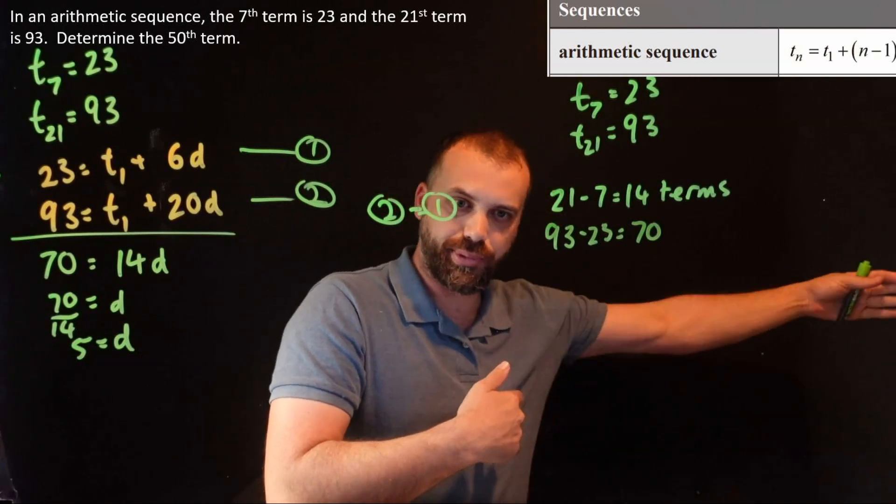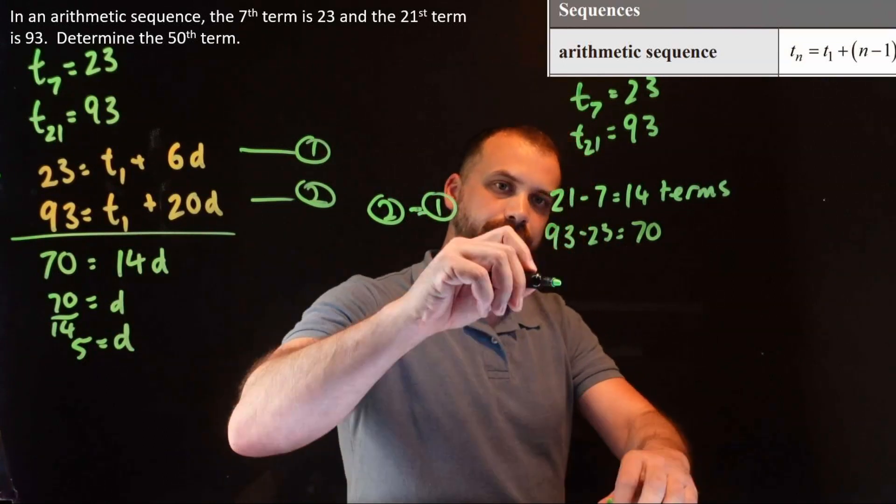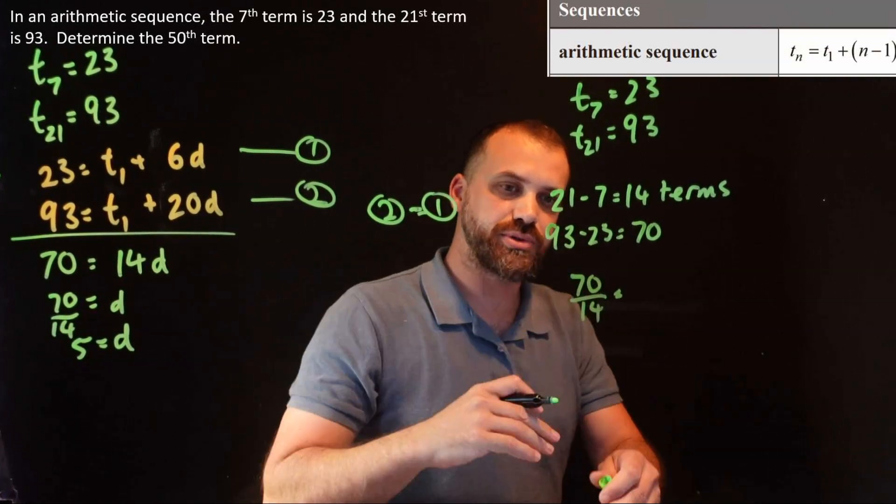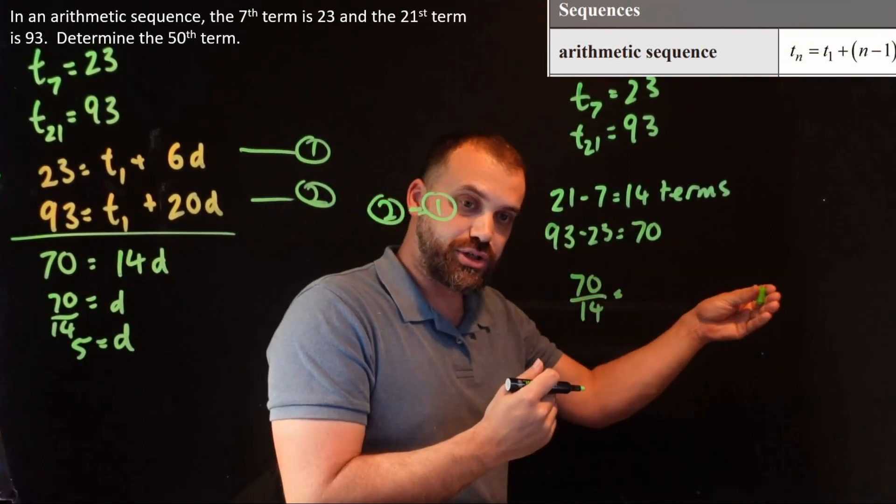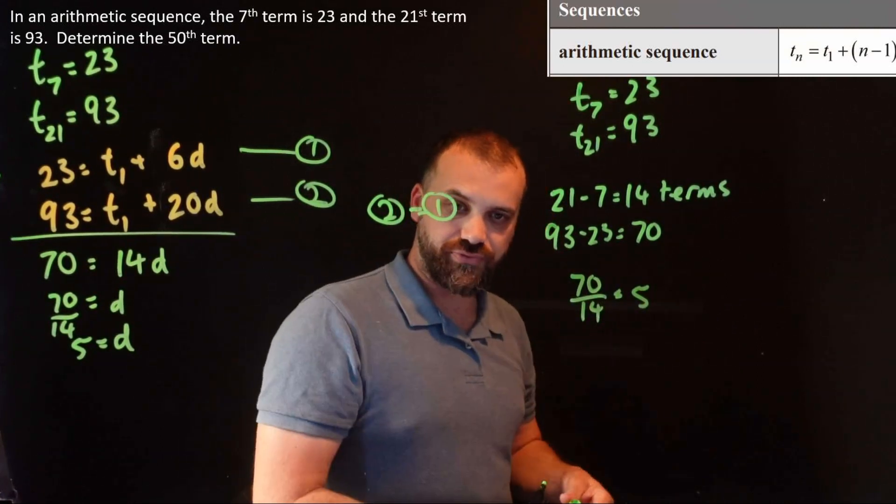So in 14 terms we've put on 70 answers, 70 new numbers. So 70 divided by 14, the number of terms, will give us how much we went up by each term. 5. Our common difference is 5.